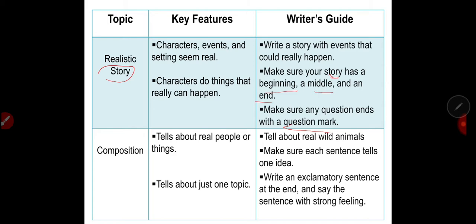While a composition, these are the writer's checklist. First, tell about real wild animals. It's not necessarily wild animal. It can also be a pet or a domestic animal. Next one, make sure each sentence tells one idea. So, a composition tells one idea, facts, attributes of your topic. Next, write an exclamatory sentence at the end and say the sentence with strong feeling. So, in this part, if your sentence has a strong feeling, you have to end it with an exclamation mark.